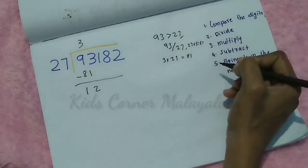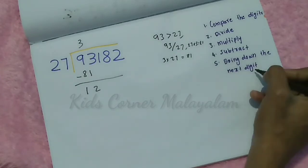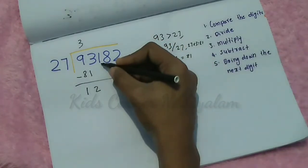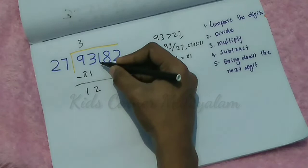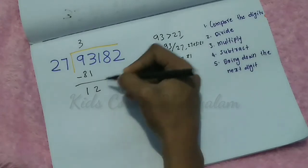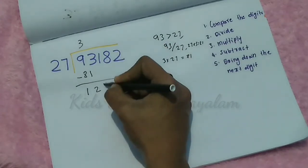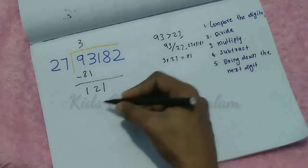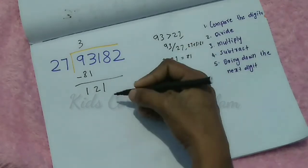Now the fifth step: bring down the next digit. The next digit is 1. We bring it down, so now we have the number 121.